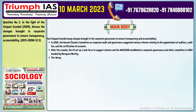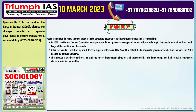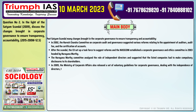Number 3: The Narayana Murthy Committee analyzed the role of independent directors and suggested that listed companies had to make compulsory disclosures to its shareholders. Number 4: In 2009, the Ministry of Corporate Affairs released a set of voluntary guidelines for corporate governance, dealing with the independence of directors, the roles and responsibilities of audit committees, the boards of companies, and whistleblower policies.